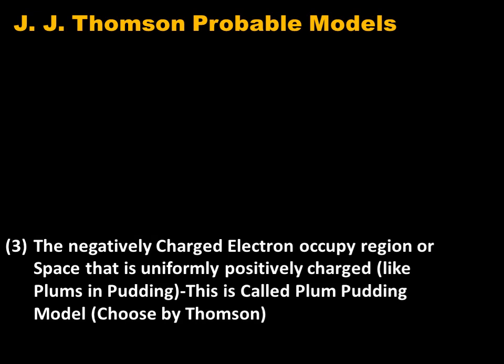Thirdly, J.J. Thomson proposed that negatively charged electrons occupy a region or space that is uniformly positively charged, like plums in a pudding. That is why this model is called the Plum Pudding model of the atom. This model was the one chosen by J.J. Thomson.